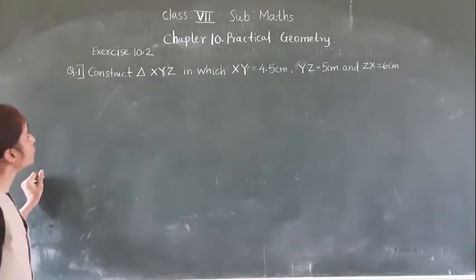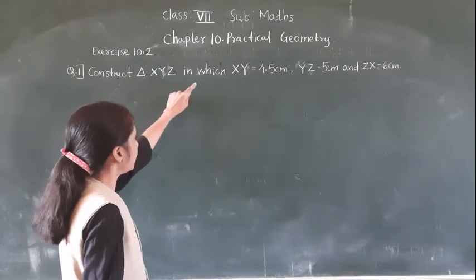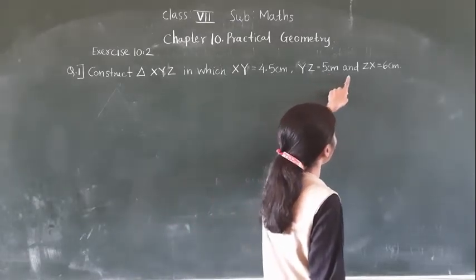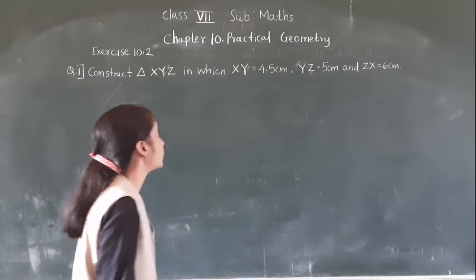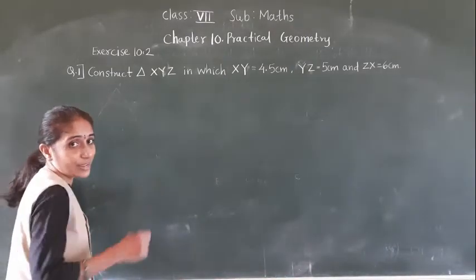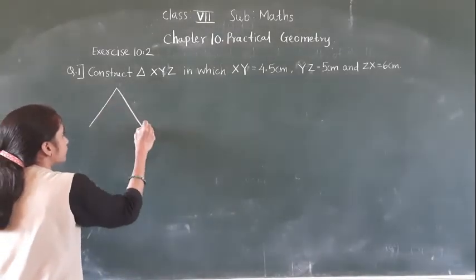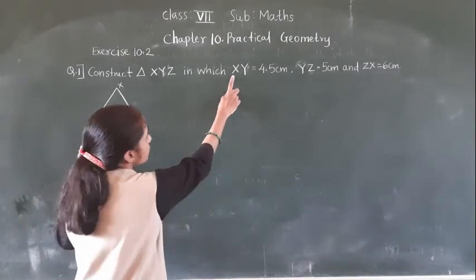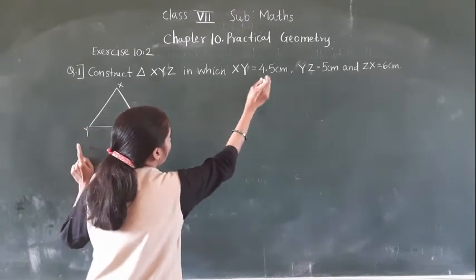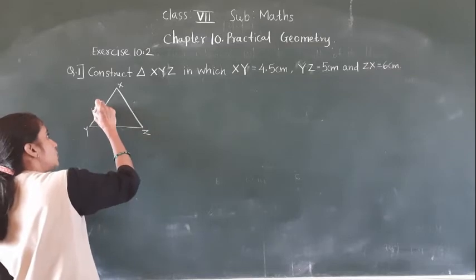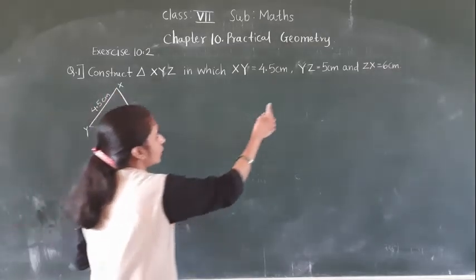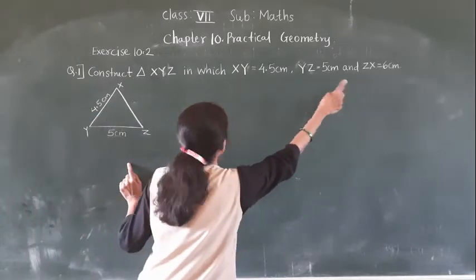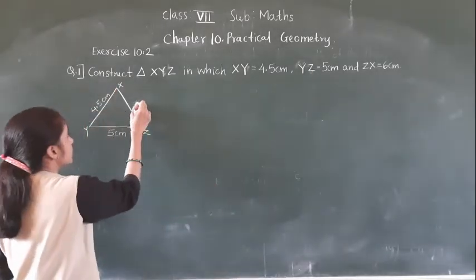Question number 1: Draw the triangle XYZ where XY is equal to 4.5 cm, YZ is equal to 5 cm, and ZX is equal to 6 cm. So first we will draw the rough pattern of the triangle — vertices X, Y, Z. XY is 4.5 cm, YZ is 5 cm, and XZ is 6 cm.